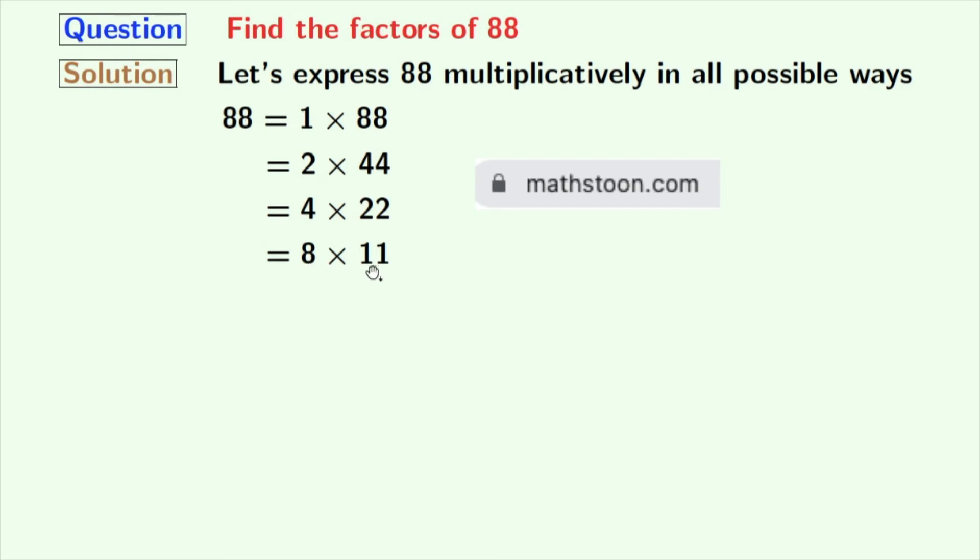Between 8 and 11 comes 9 and 10, but these 2 numbers do not divide 88. Next number 11 is already here, so we need not factorize further.